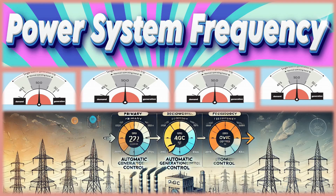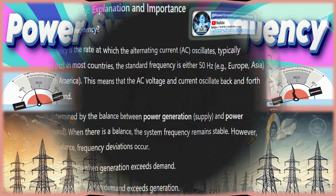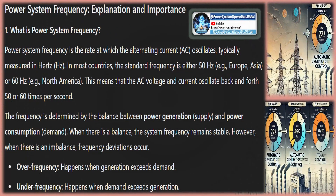The term power grid frequency, also known as grid frequency, describes the rate at which an electrical grid's alternating current AC power supply changes direction. Grid frequency, which is typically represented in Hertz, is a technical term that refers to the number of times the alternation cycle happens per second.